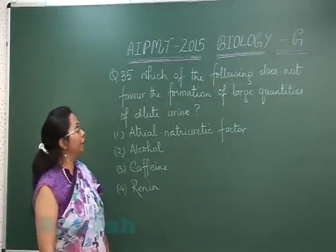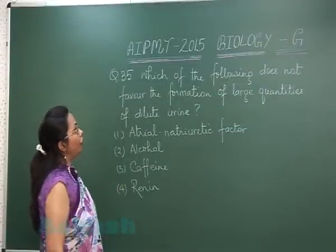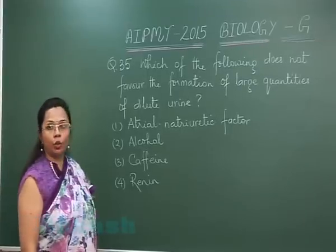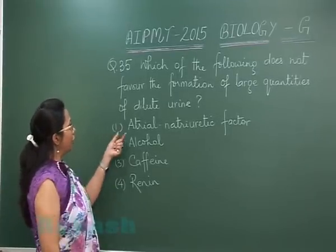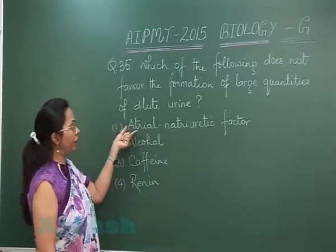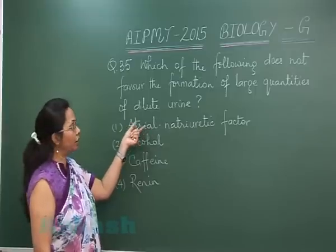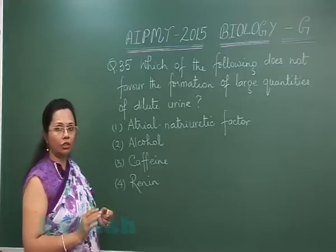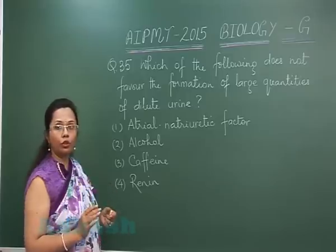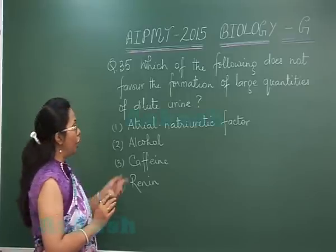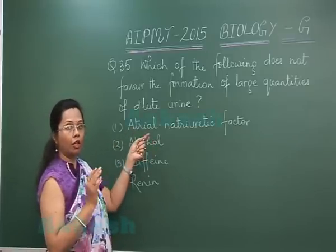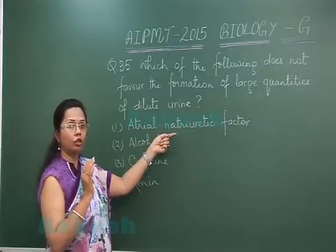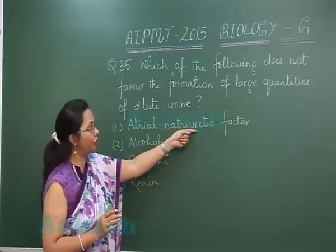Question number 35: which of the following does not favor the formation of large quantities of dilute urine? Atrial natriuretic factor opposes RAS, that is the renin angiotensin aldosterone system, and also opposes ADH. So if both these are opposed, there will be no water absorption and no sodium absorption.